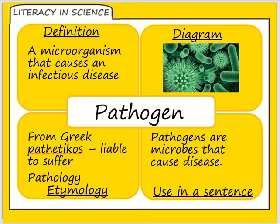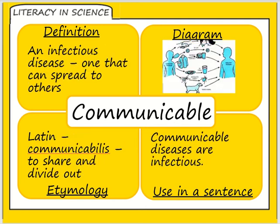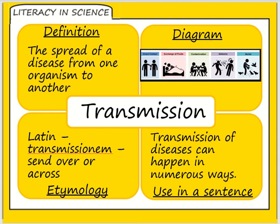Protists and fungi are pathogens, which are microorganisms that cause an infectious disease. They are communicable, which means they are infectious diseases that can spread from one organism to another. The spread of a disease from one organism to another is called transmission.